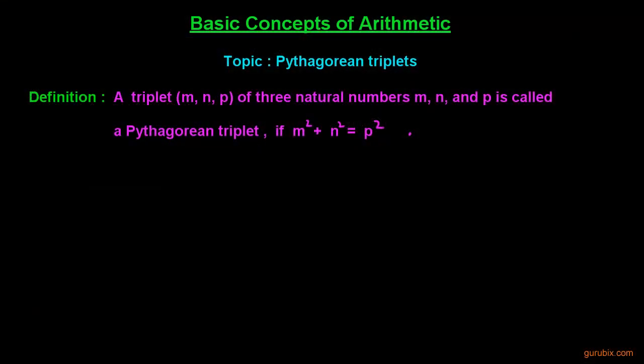Welcome friends. In this video, we shall learn Pythagorean triplets. We can define a triplet like this: a triplet m, n, and p of three natural numbers is called a Pythagorean triplet if it fulfills the condition m square plus n square is equals to p square.